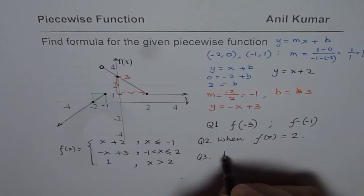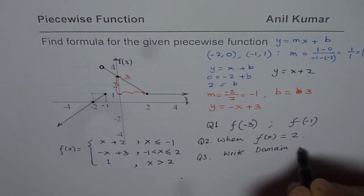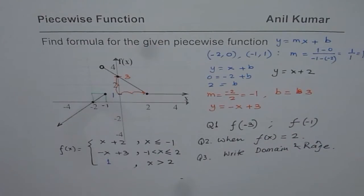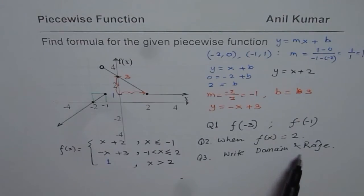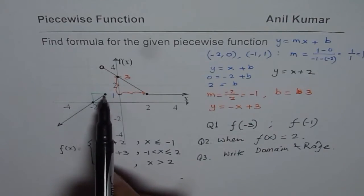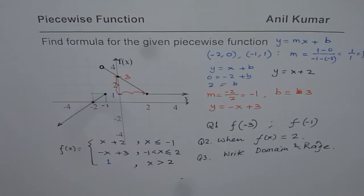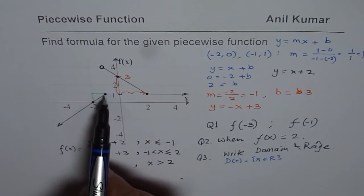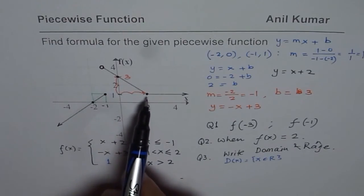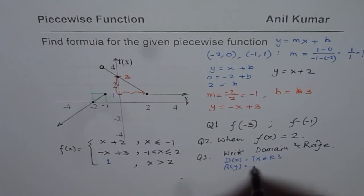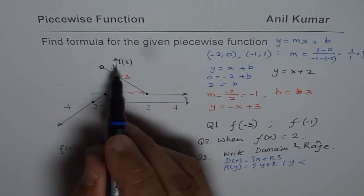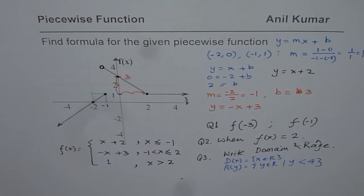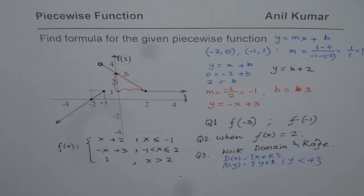The last question is to write the domain and range of the given function. You can pause and write down your answers. The domain is all real numbers, since x equals minus one is included for the leftmost function. The range is restricted — we find a discontinuity, but the range is always less than four. So the range is y belongs to real numbers and y is less than four. Try to do these questions, and I hope you understand all the concepts. Thank you and all the best.